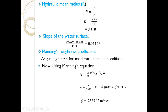Based on the channel condition — a natural channel in moderate condition — we select Manning's roughness coefficient n = 0.035 from standard tables. Substituting all parameters into Manning's equation: Q = (1/0.035) × (3.418)^(2/3) × (0.01146)^(1/2) × 335.